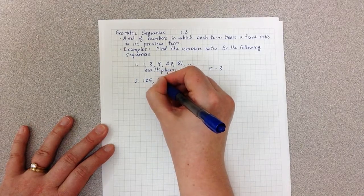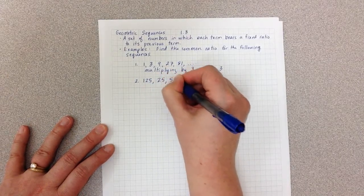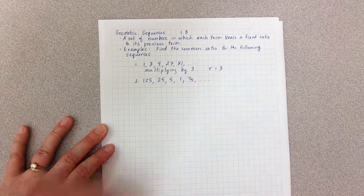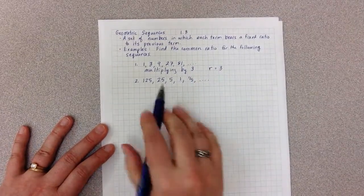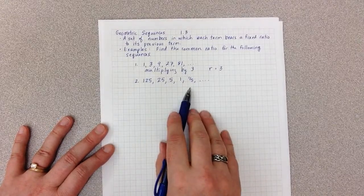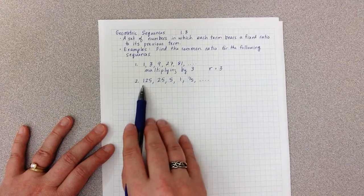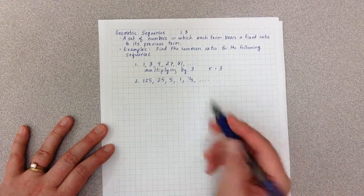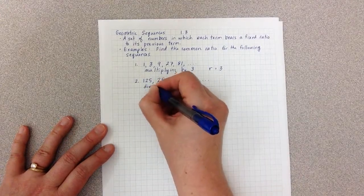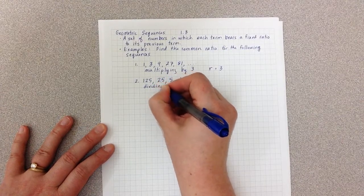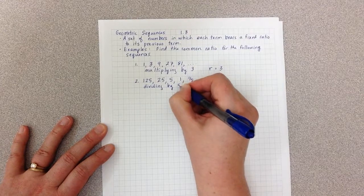Example 2: 1, 1/5, 1/25, etc. In this example our numbers are getting smaller. Unlike number 1 where we're seeing bigger numbers and we're multiplying, we might say that here we're dividing by something. And in fact we are dividing by 5.